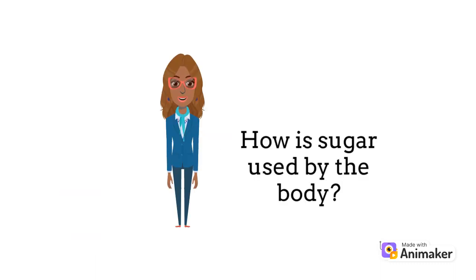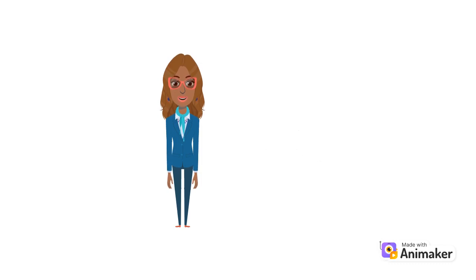When sugars are eaten, the body breaks them down in the gut to their simplest form, which is called glucose. Glucose is then absorbed into the bloodstream. Insulin is the key that allows glucose to leave the bloodstream and enter cells.